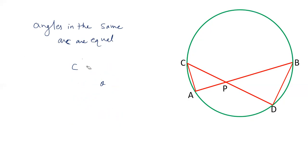So let us use this property to prove this. Angle ACP and angle DBP are equal. Angles in the same arc. You can also say angle ACD and angle ADB, angles in the same arc.